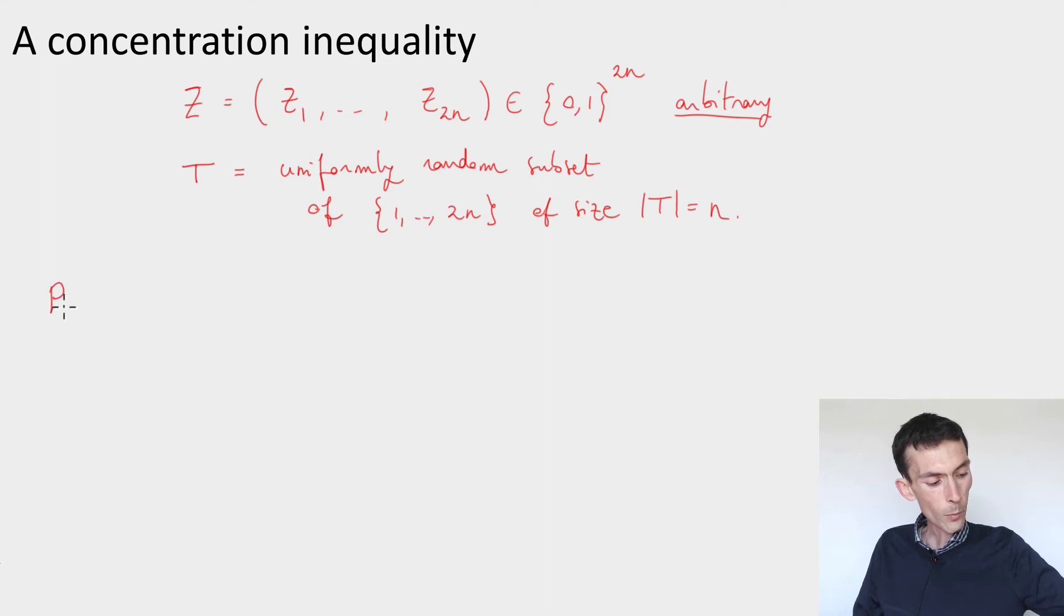It says that the probability over z and t that two things happen. First of all, if I look at all the indices that are in t and sum the values of zi, I would observe something, a total sum that is less than delta n for some delta.